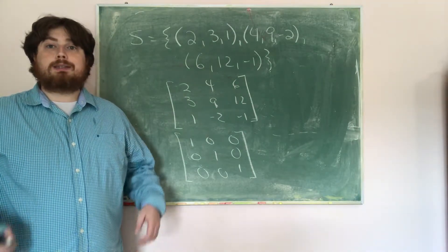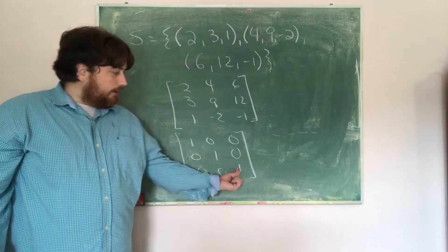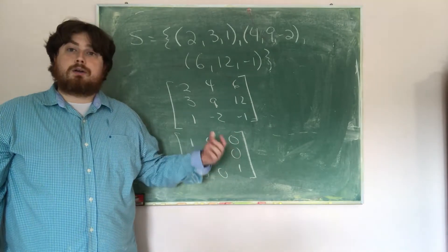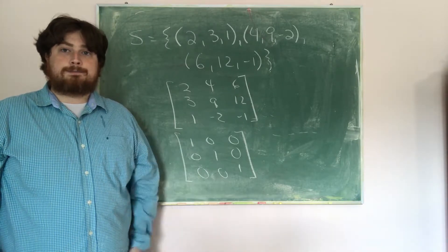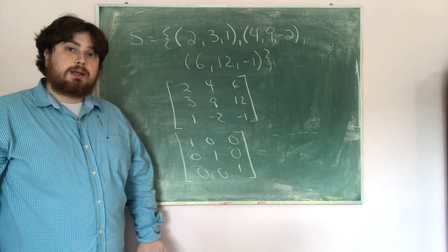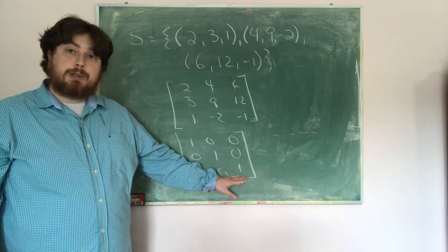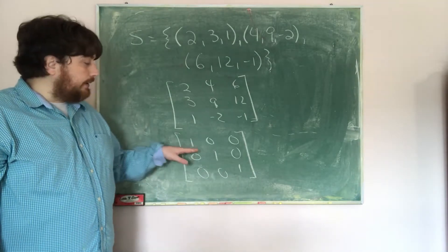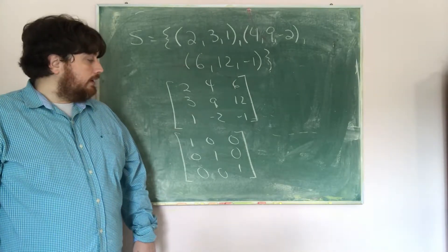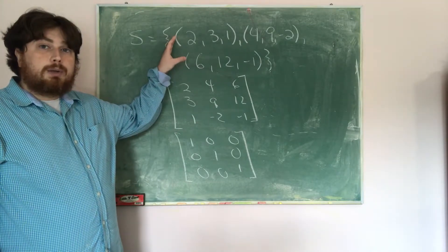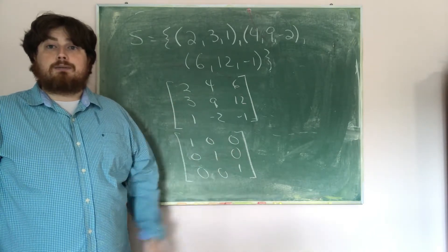Therefore, looking at the leading ones — there's a leading one in each position — there are no free variables, so this set is linearly independent. And since each row has a leading one, it spans all of R cubed. Hence, this set of vectors is both linearly independent and spans R cubed, which means it is a basis of R cubed.